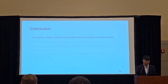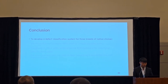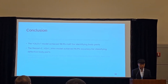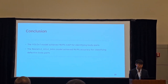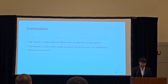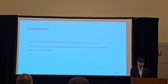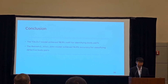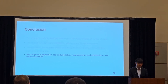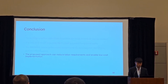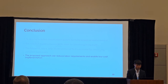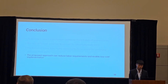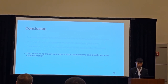My conclusion is: we developed a defect classification system for a new breed of native chicken. The YOLOv7 model achieved 98.9% mAP for identifying the body parts, and the ResNet V2-101 BiT-M model achieved 96.9% accuracy for classifying the defective body parts. The proposed approach is expected to reduce labor requirements, enable low-cost implementation, improve the efficiency of the slaughter process, and increase the economic value of the slaughter industry.